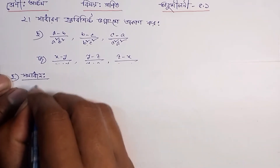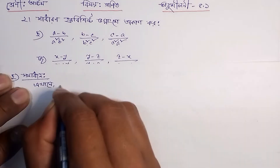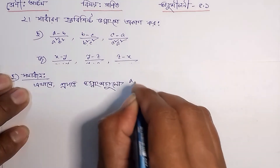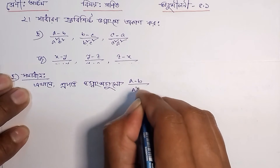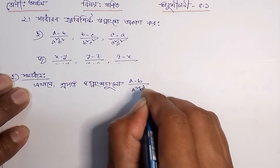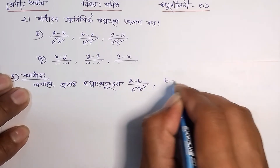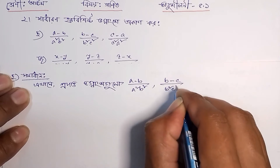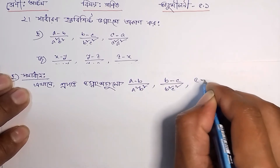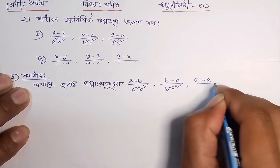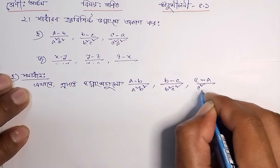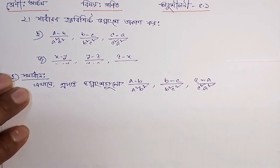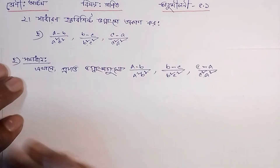Kajay aamra lihgba. Ekhanem pradattho bhabhnaang shaggula: (a-b) divided by (a² b²), (b-c) divided by (b² c²), (c-a) divided by (c² a²). Evar aamra ai tinti bhabhnaangshya har gulor...